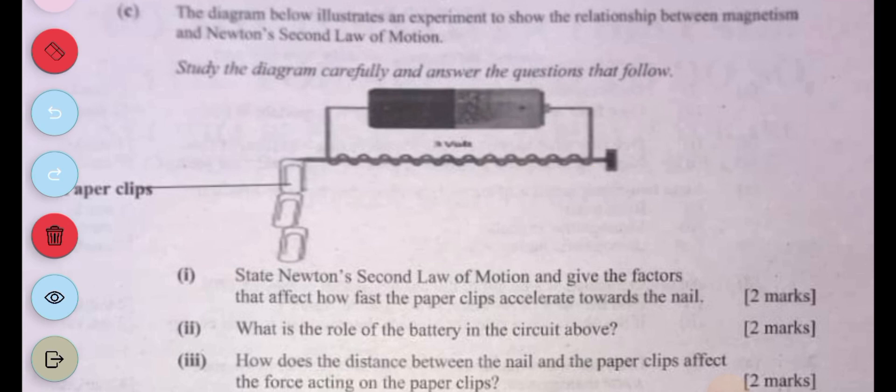If the force is greater, the paperclip will move faster. If the mass of the paperclip is lower, the speed with which the paperclips accelerate towards the electromagnet will be higher. If the distance is higher, the electromagnetic force will be lower.